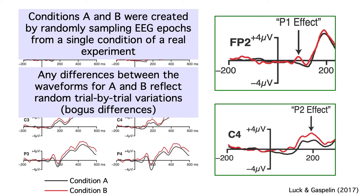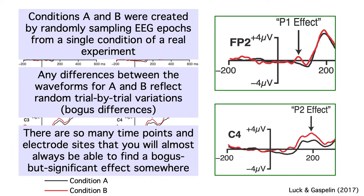But in a real experiment, it would be hard to know. Why did I find these bogus but significant effects? Well, there are so many time points and electrode sites that you could analyze in an ERP experiment that random variations are bound to cause some fairly large differences somewhere in the data. And if you measure at the time points and electrode sites where you see big differences between conditions, you'll almost always find some statistically significant but completely bogus effects.